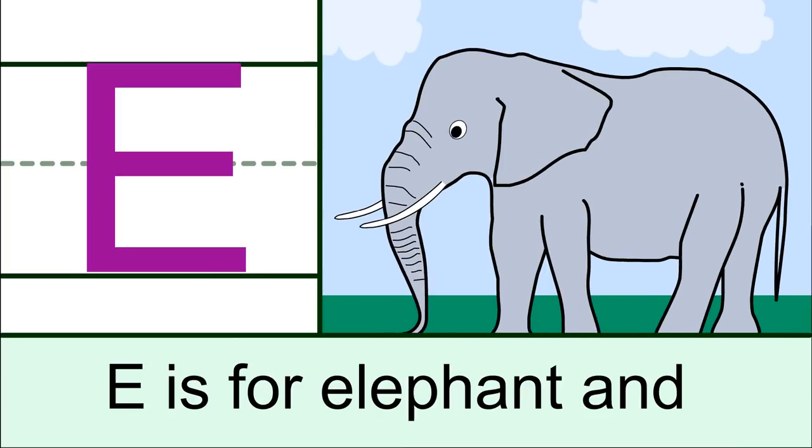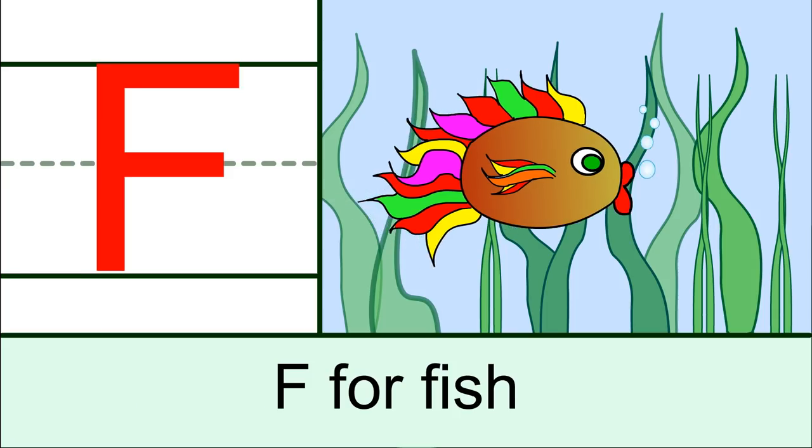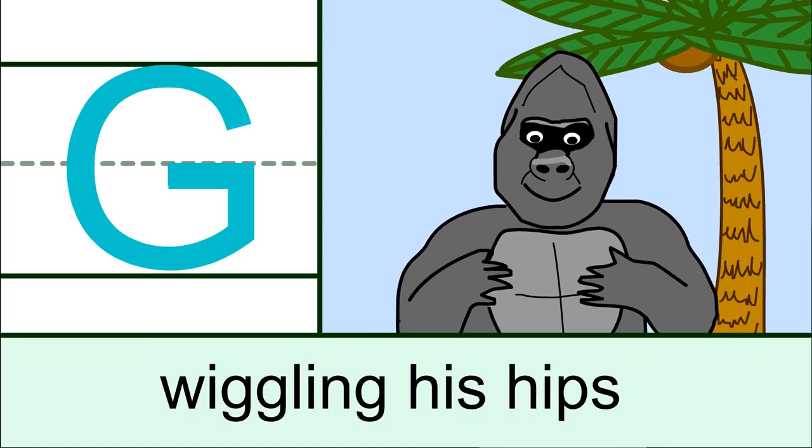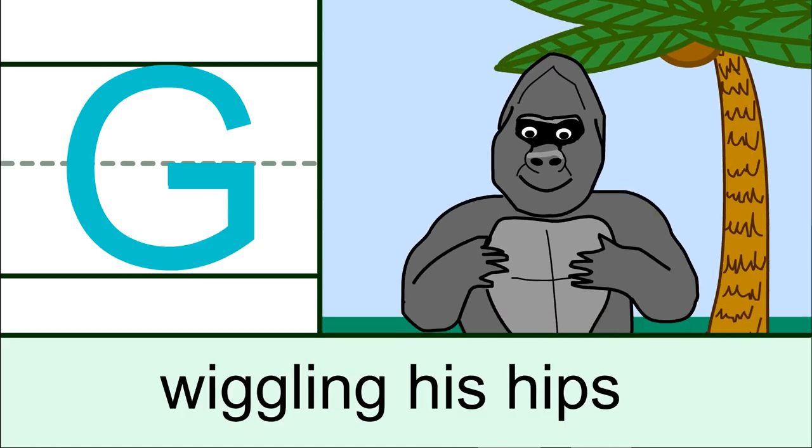E is for elephant, F for fish, G for gorilla, wiggling his hips.